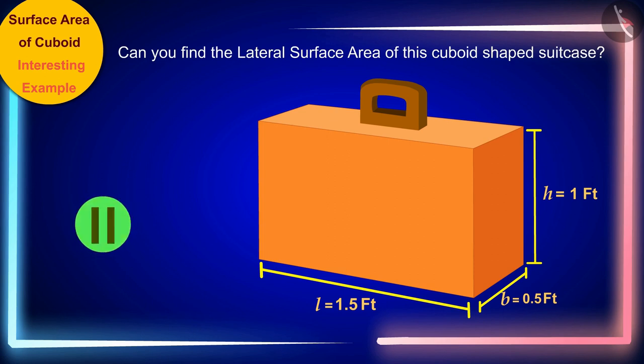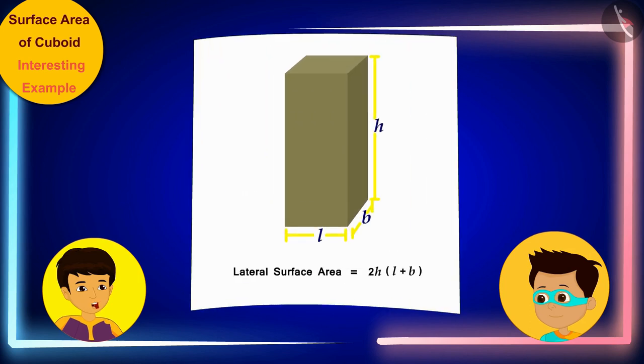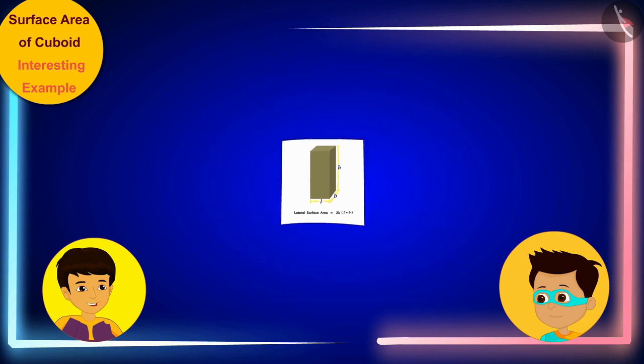According to the formula written in the formula book, this is the formula for the lateral surface area of the cuboid, where l, b, and h are the length, width, and height of the cuboid.